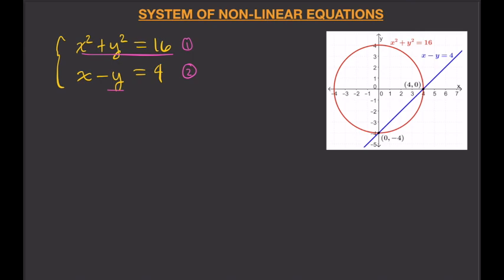Let's see if we could use elimination for this system. It turns out we can't, because in my first equation I have x squared and y squared, while in my second equation I have only x and y. There's no way to eliminate the x squared because there's no x squared in my second equation, and similarly for y squared. So we can't do elimination, and we stick with substitution. Typically, in solving systems of nonlinear equations, you can just use substitution.